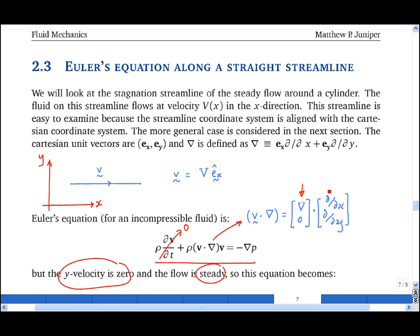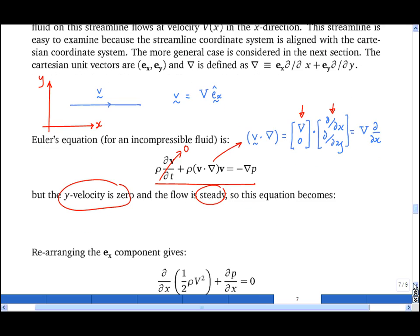I've got a vector dotted with a vector operator. This gives me a scalar operator, which is just big V d by dx. So the left-hand side of the Euler equation becomes rho big V d by dx of V, which is just big V ex.